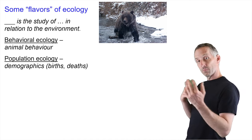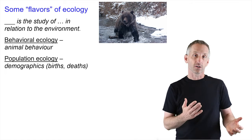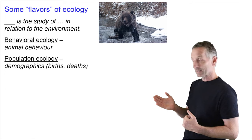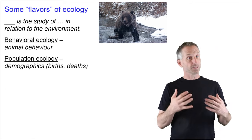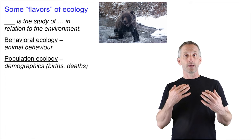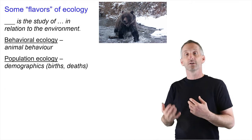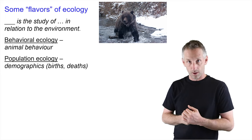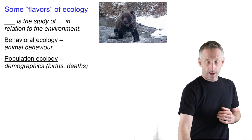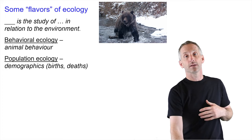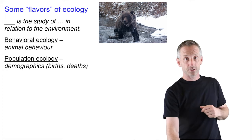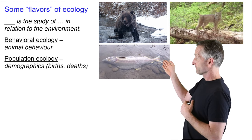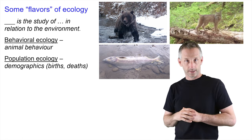Then we'll talk about population ecology, which is the study of demographics — that is births and deaths — in relation to the environment. How does the environment shape the numbers of organisms produced in a given year, the number that die, and how does that influence the age structure and dynamics of populations? I'm going to leverage two things from those introductory materials: the population cycles of pink salmon and lynx.